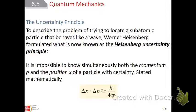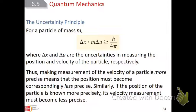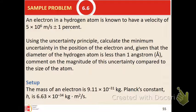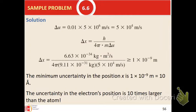They're just moving too fast. We are not going to do the math on the uncertainty principle. I want you to know what the Heisenberg uncertainty principle says in words: it is impossible to know at the same time both the momentum and the position of an electron with certainty. I want to spend our time instead working with electron configurations.